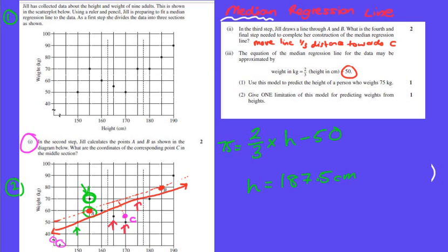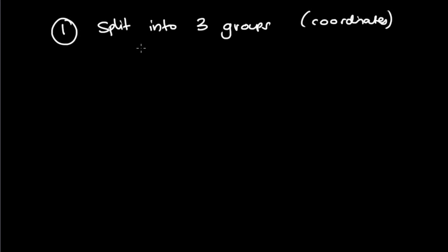All right, so now just to wrap things up, just on your median regression line. Number one, when you're drawing a median regression line, we want to split it into three groups - your coordinates into three groups. Split your coordinates into three groups, even if possible, or at least the first and last group being even. That's the first one.